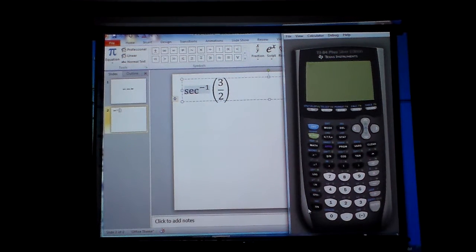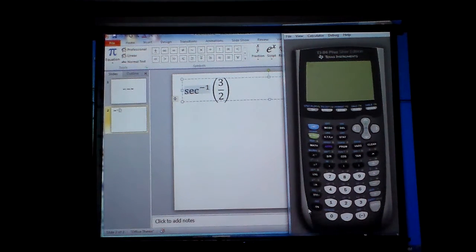So, this is called arc secant, or the inverse function secant.